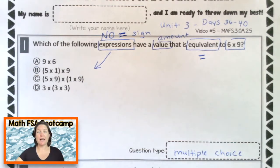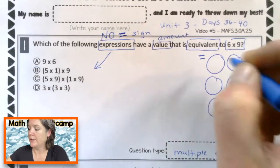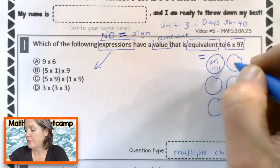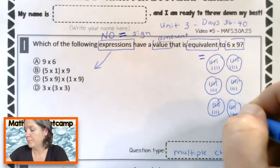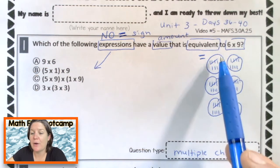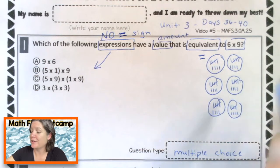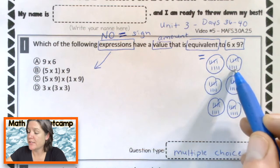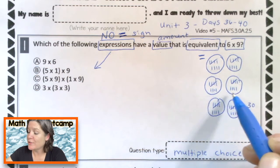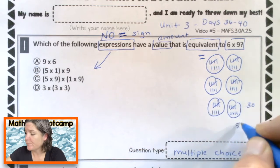When I see six times nine, that means six groups of equal things — six groups of nine. So I'm going to draw six groups and draw nine in each. Then I can count by fives first: 5, 10, 15, 20, 25, 30. And now we go back: 31, 32, 33, 34, 35, 36, 37, 38, 39, 40, 41, 42, 43, 44, 45, 46, 47, 48, 49, 50, 51, 52, 53, 54. So six times nine equals 54.